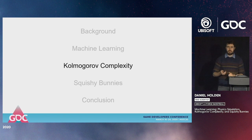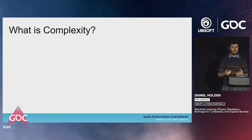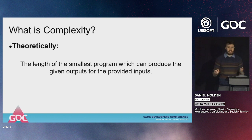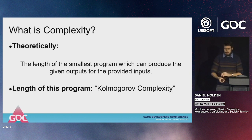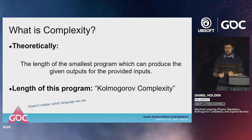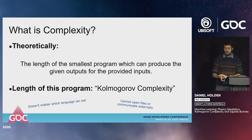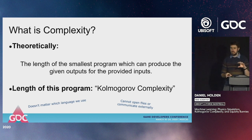That's where Kolmogorov complexity comes in — a theoretical, abstract measure of complexity. It's defined as the length of the smallest program which can produce the given outputs for the provided inputs. A couple of caveats: it doesn't matter which programming language we use — there's a proof showing it's invariant up to some constant. Also, we're not allowed to open files or communicate externally; all data must be embedded in the source code.